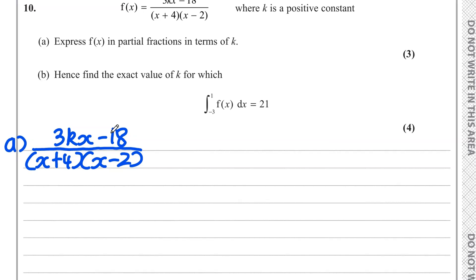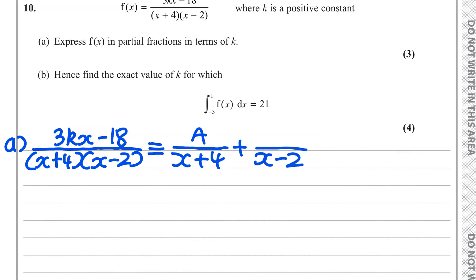This is a partial fractions question, so we need to split this up into partial fractions. We're going to split it into two partial fractions because we have two brackets in the denominator. One will have the denominator (x + 4) with numerator A, and the other will have the denominator (x − 2) with numerator B. A and B are constants we need to find. The first step is to multiply everything in this equation by the denominator — the two brackets (x + 4) and (x − 2).